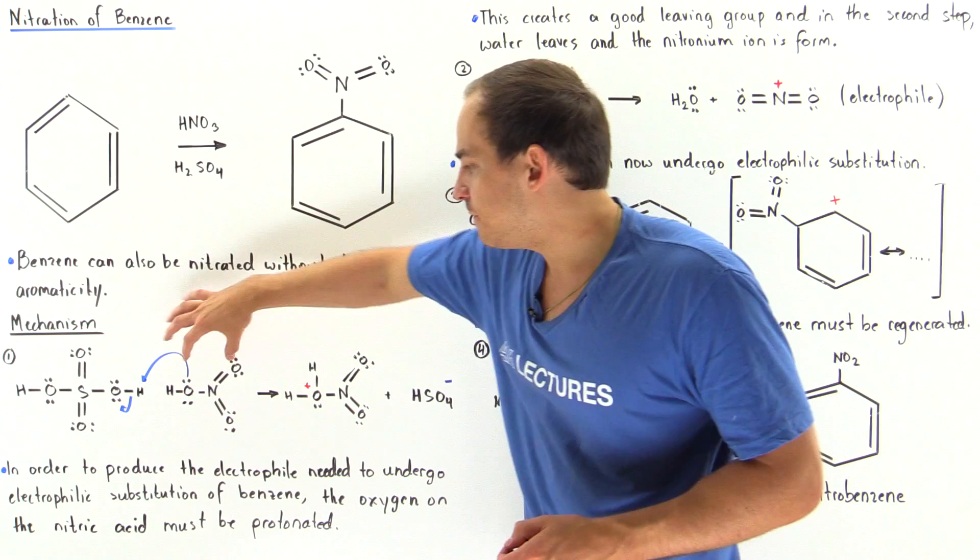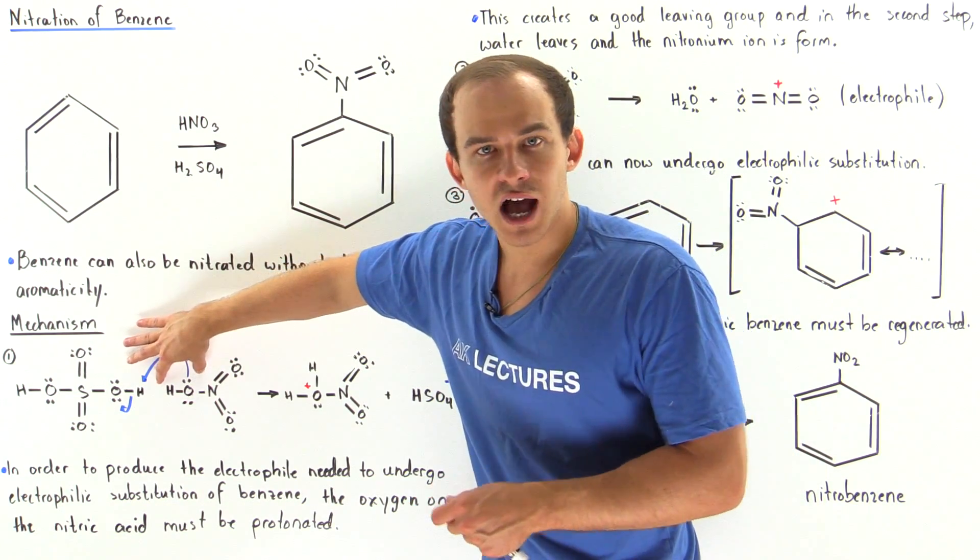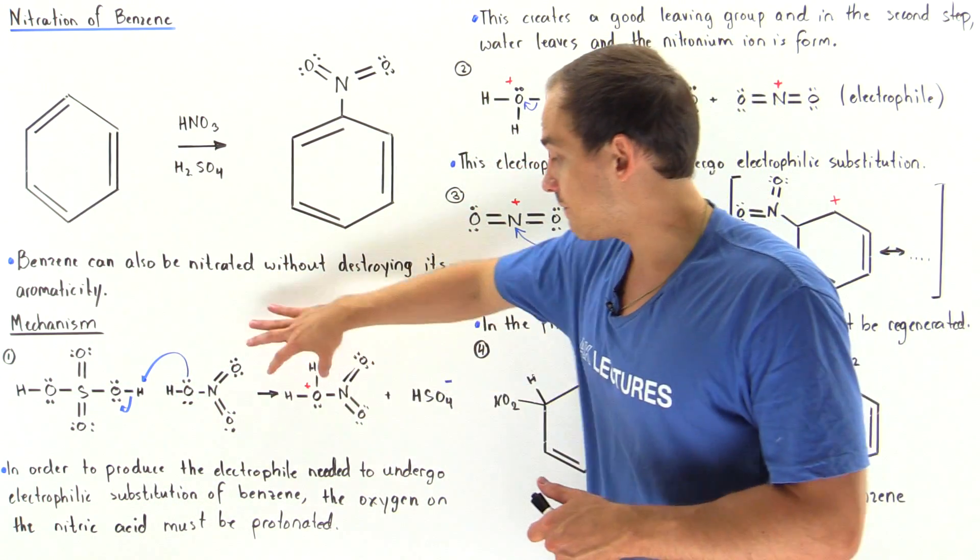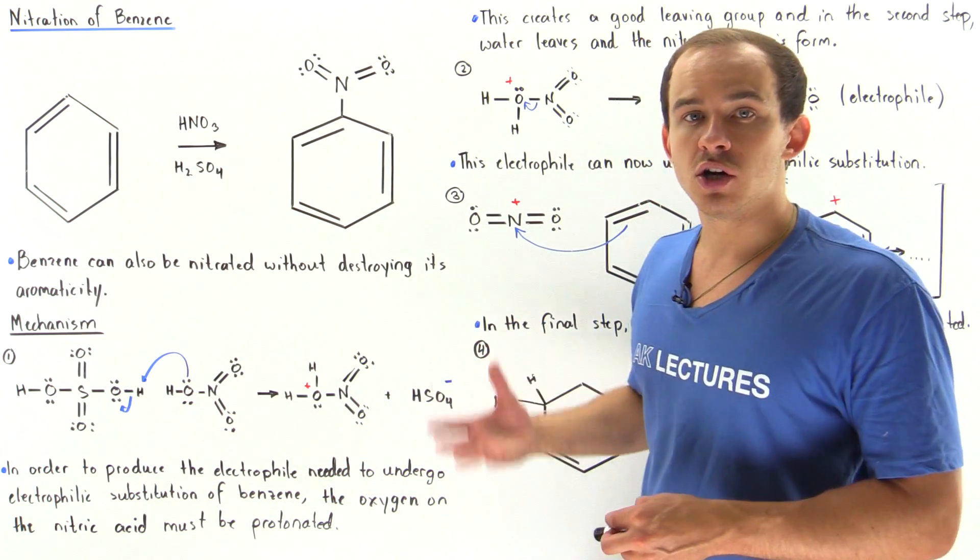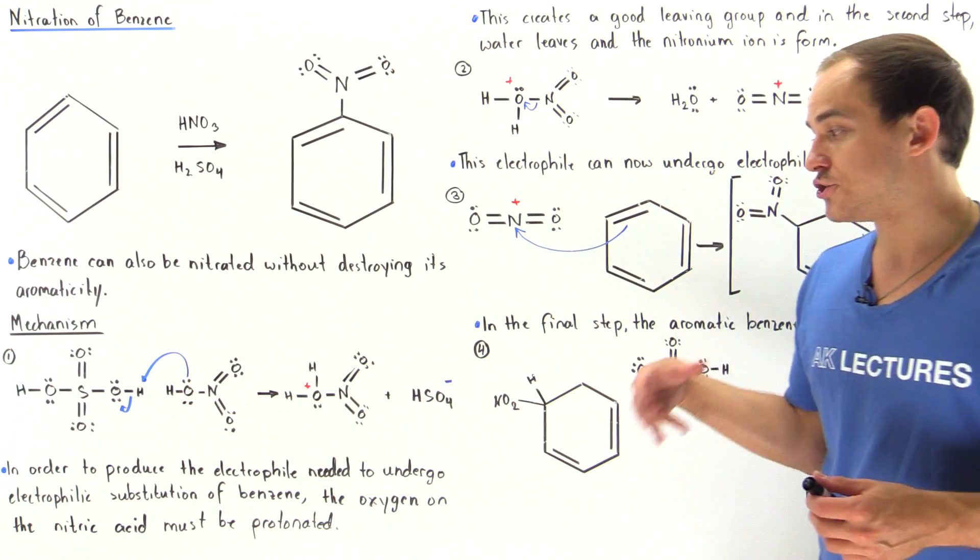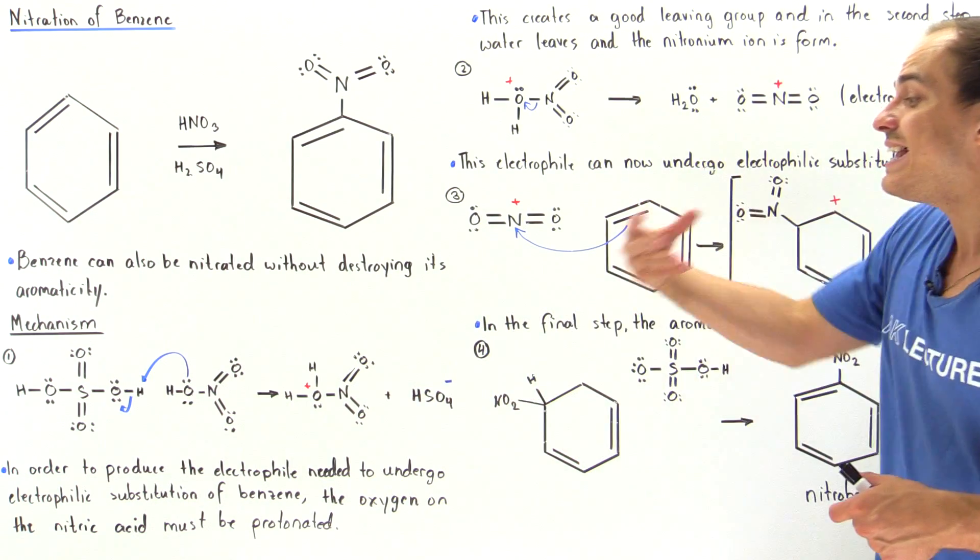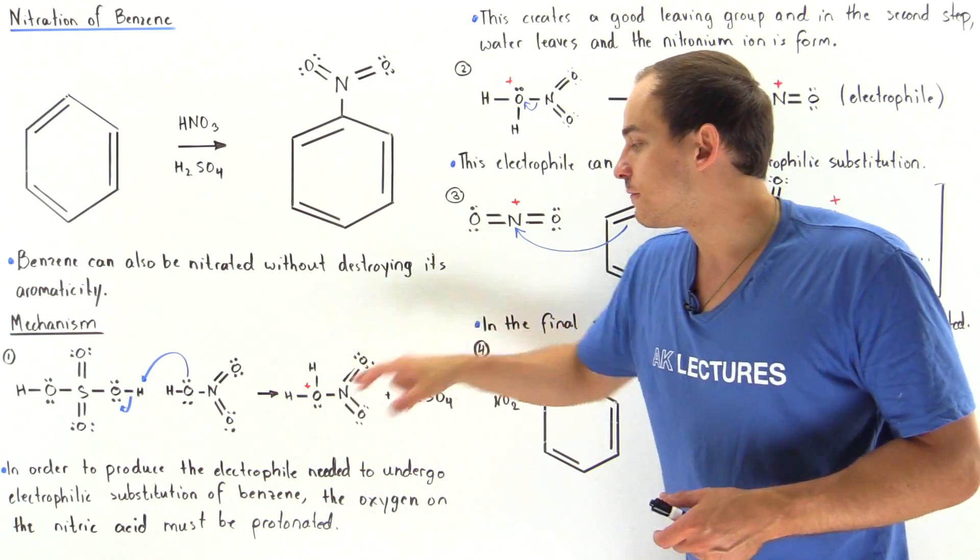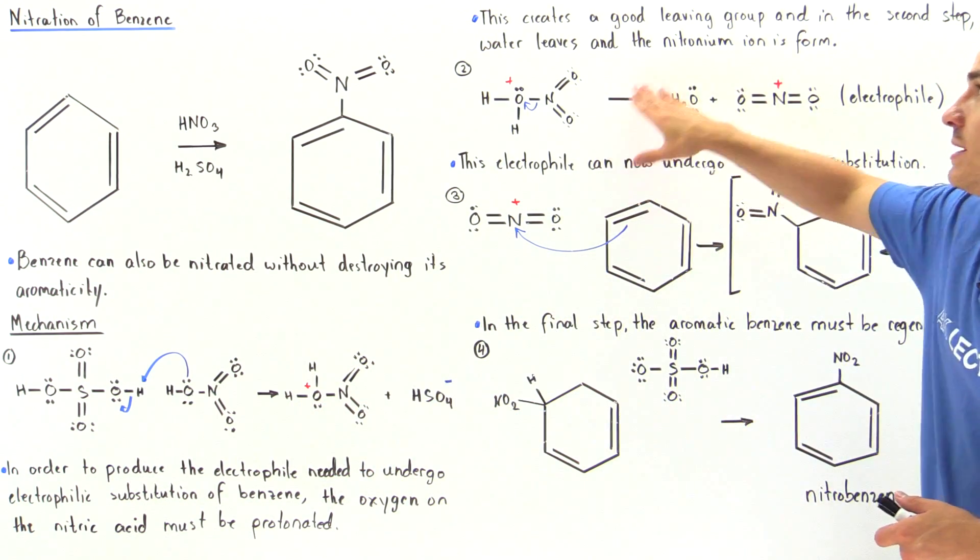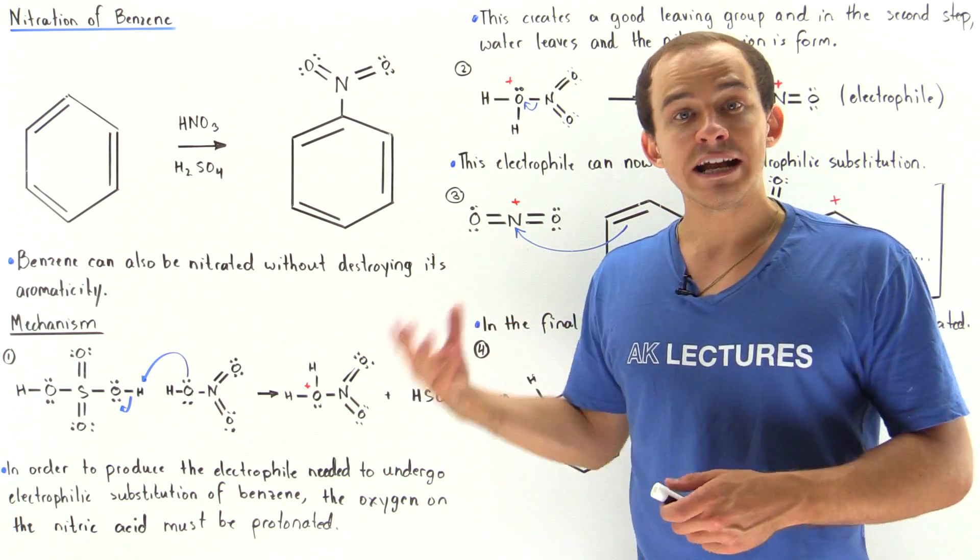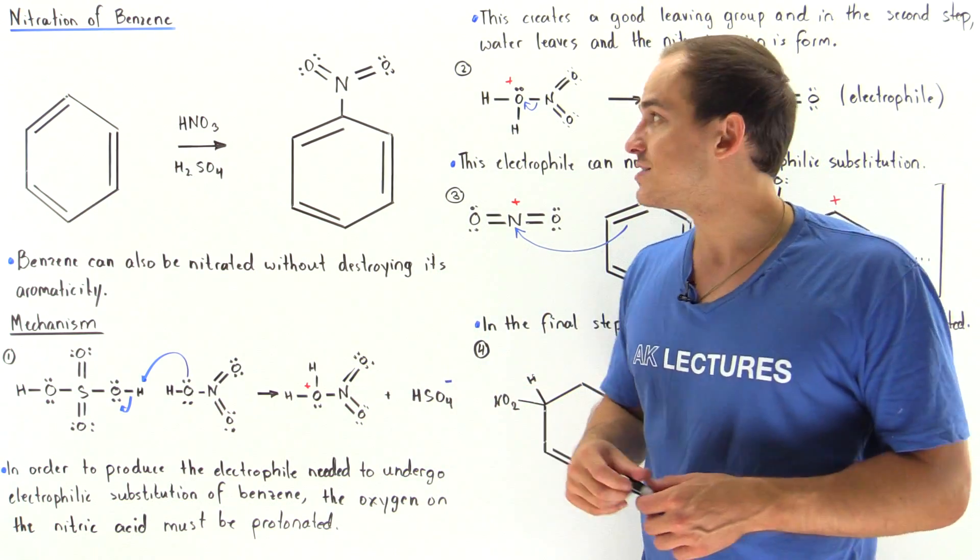Notice before we have the hydroxide which is a very poor leaving group, and now we have water which is a good leaving group. This will ensure that this water will now leave, detaching itself from the molecule and forming our nitronium ion, our electrophile, the good Lewis acid.